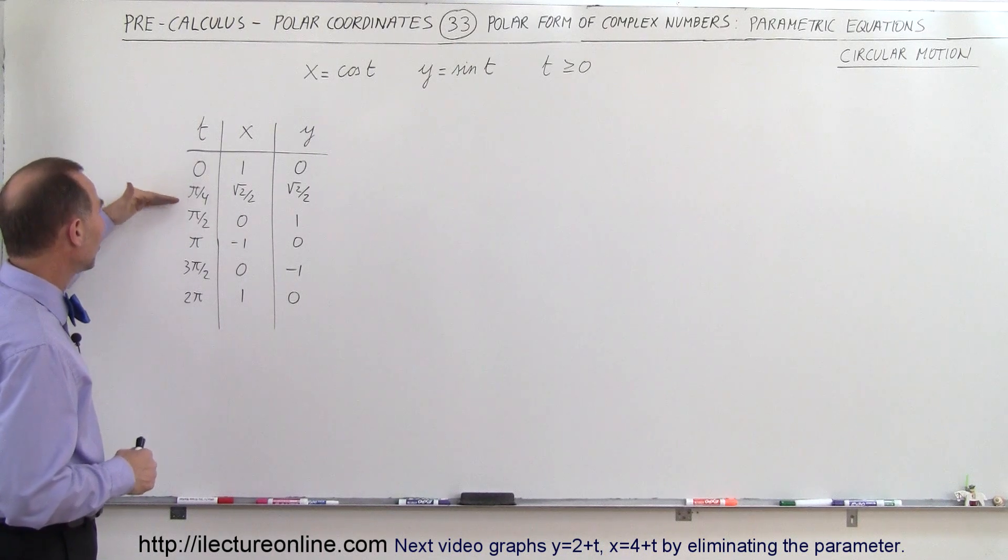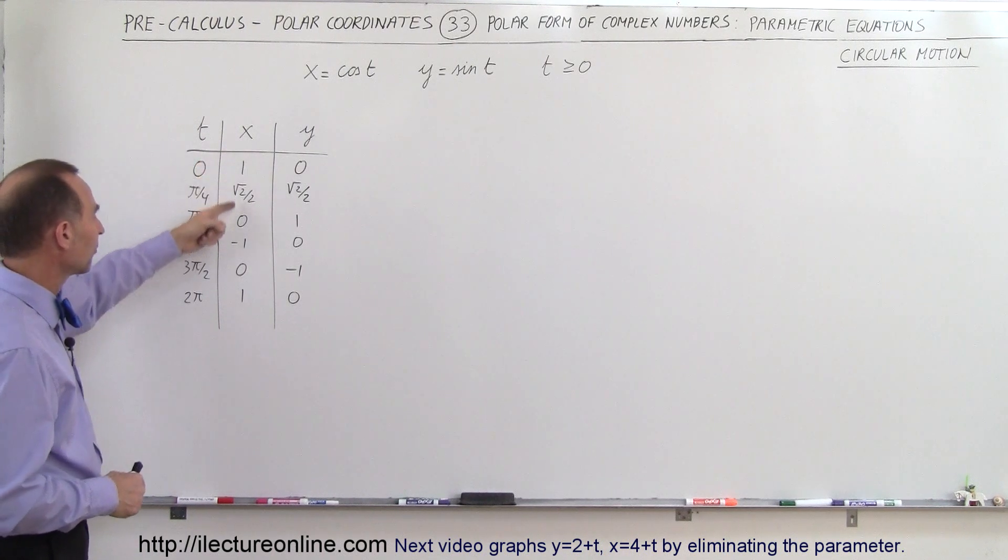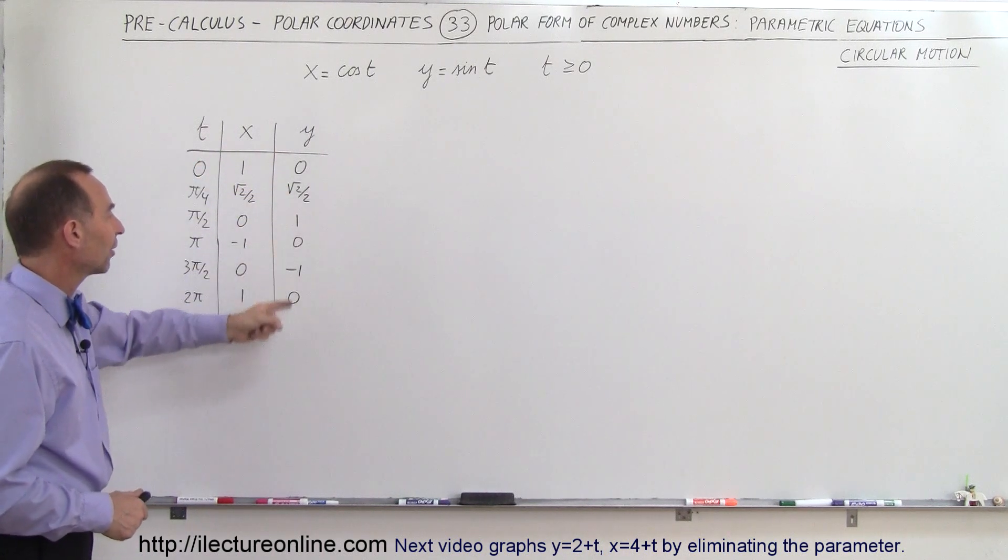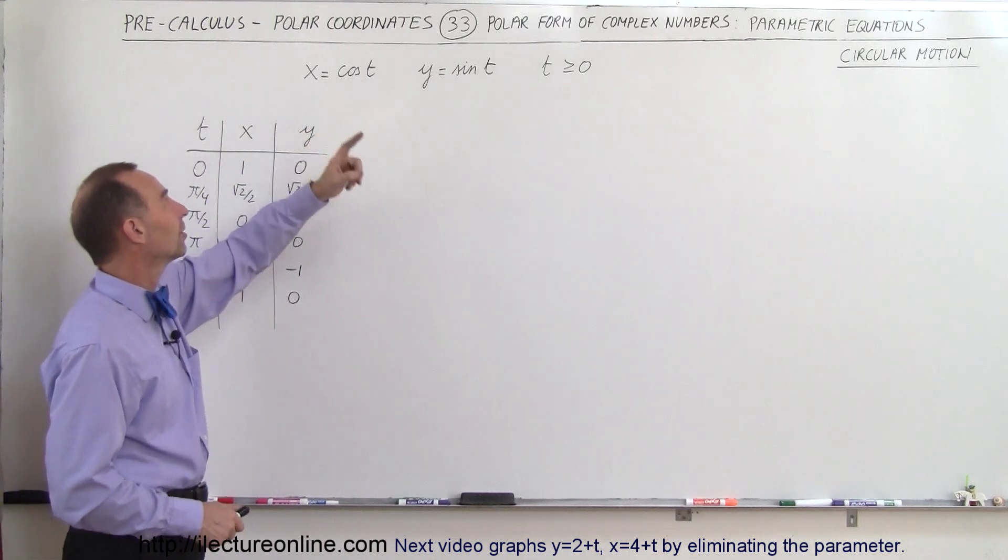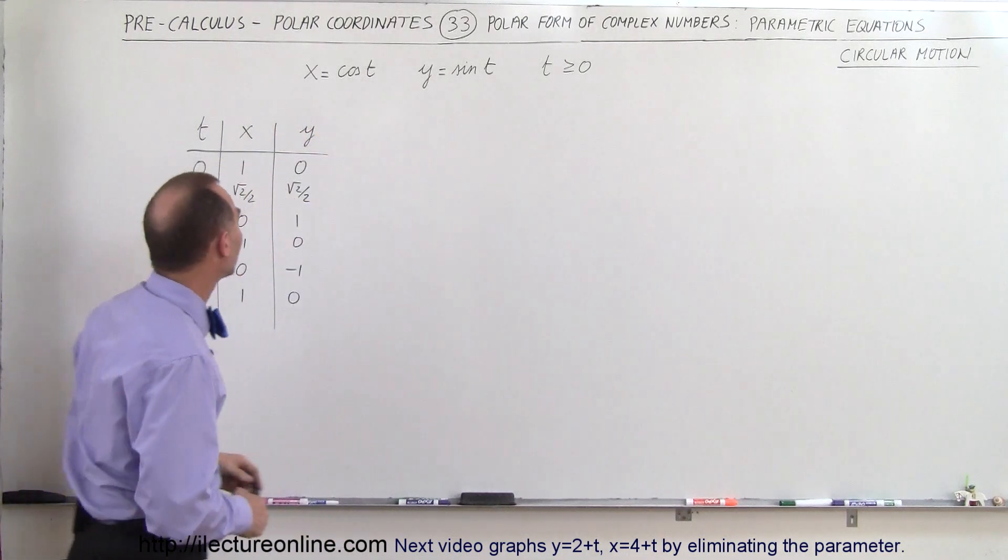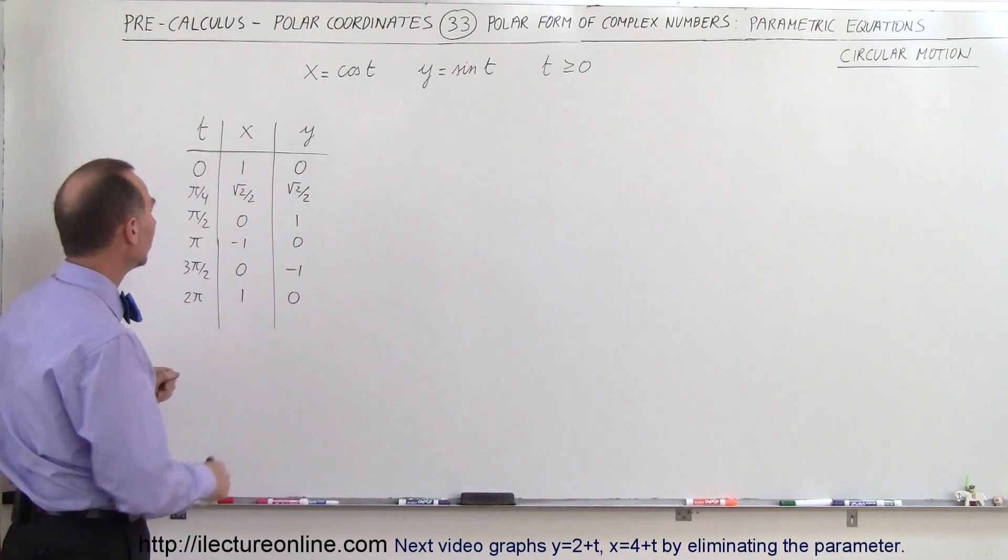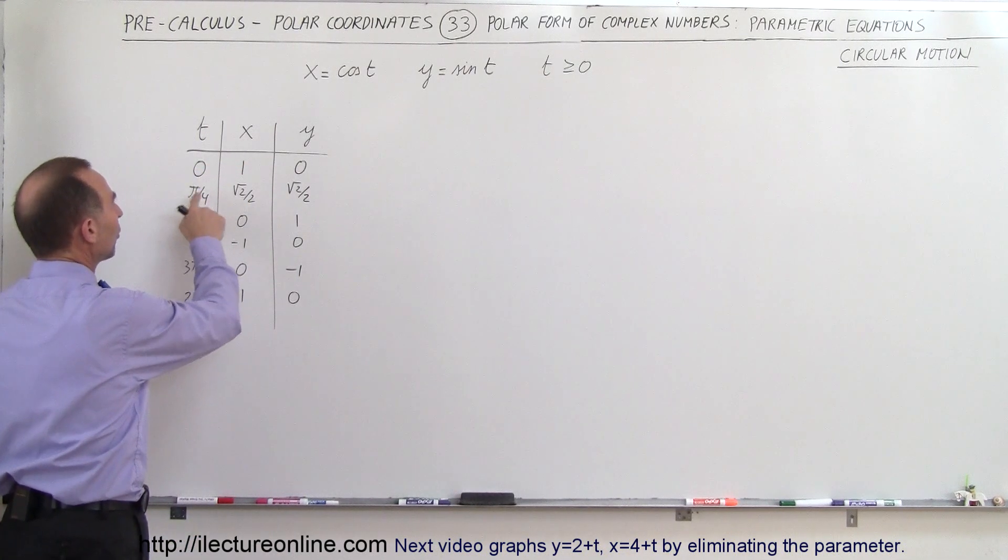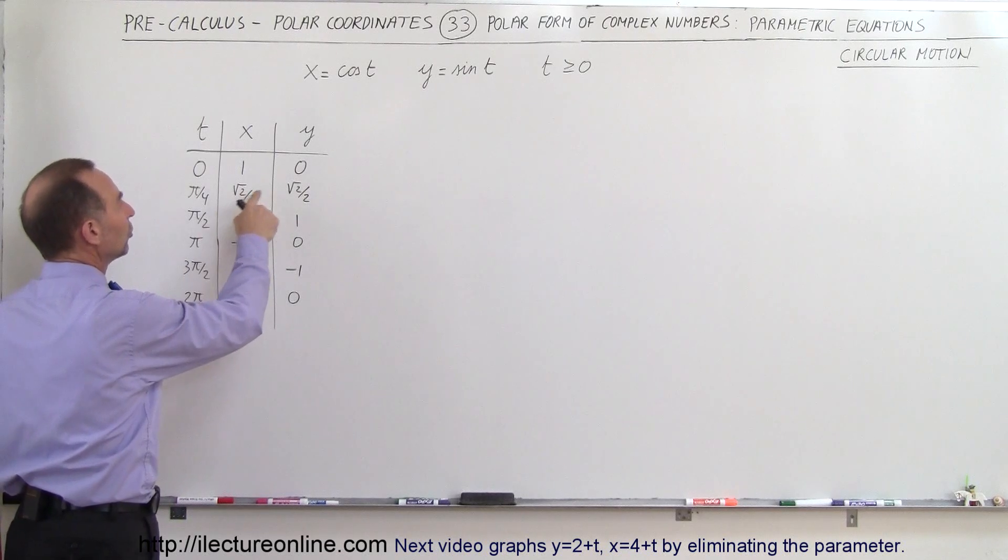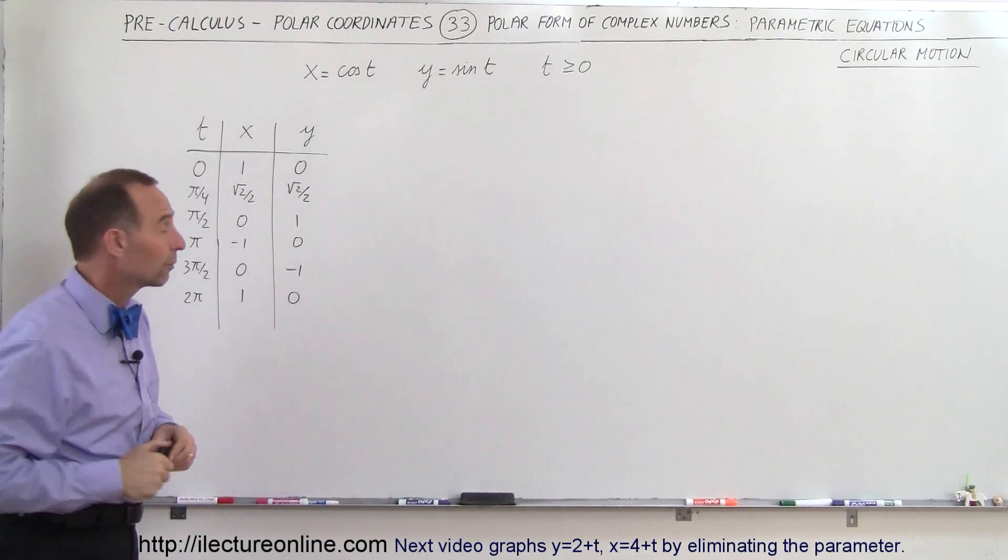If we plug in different values for t, we'll get corresponding values for x and corresponding values for y. Since x is cosine of t and y is sine of t, you can see that when t is equal to 0, x equals 1, y equals 0. When t equals π over 4, then x will be the square root of 2 over 2, and so will y.